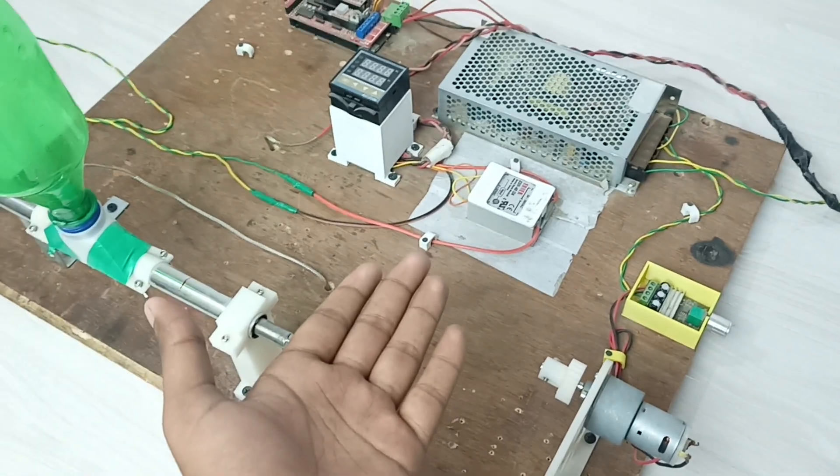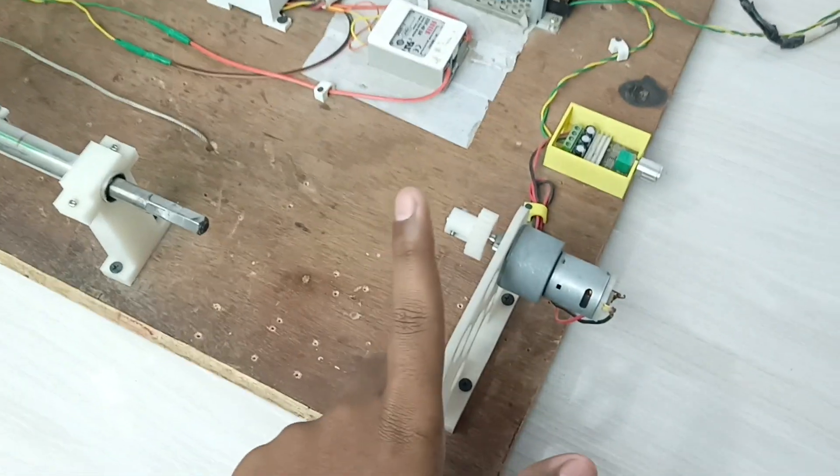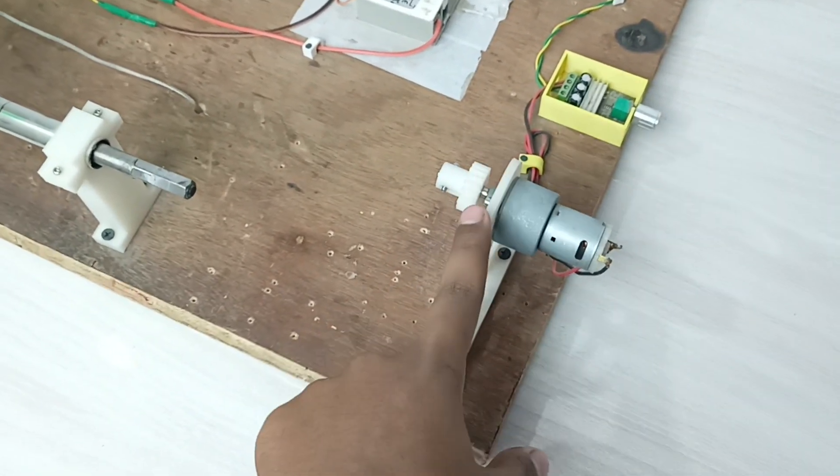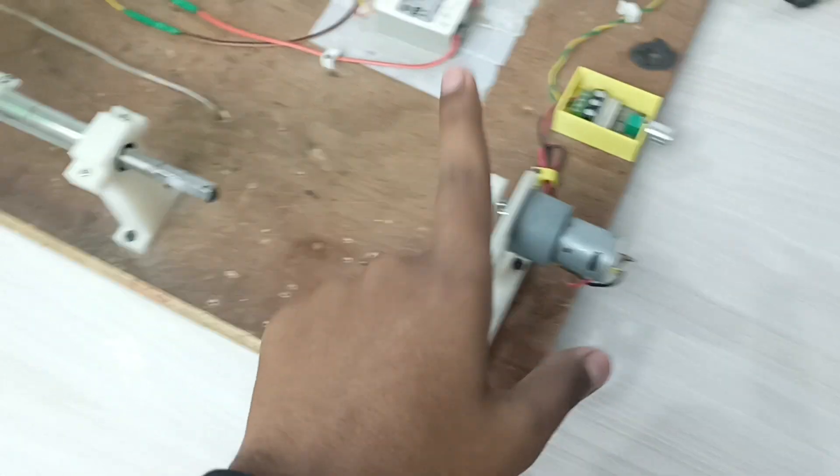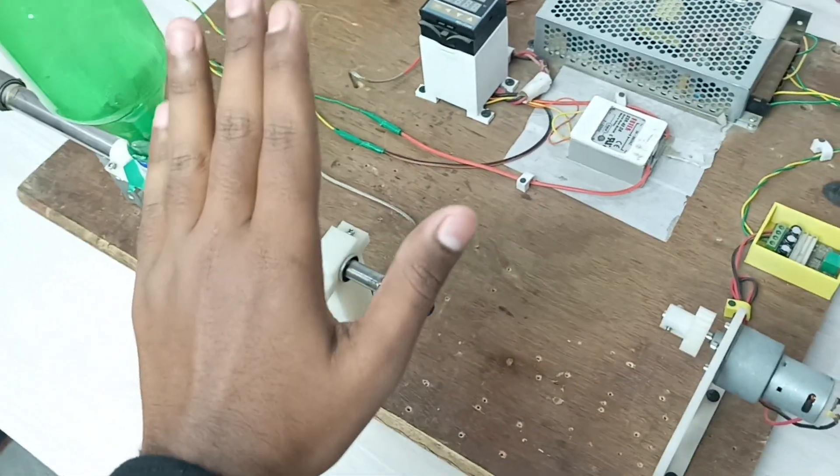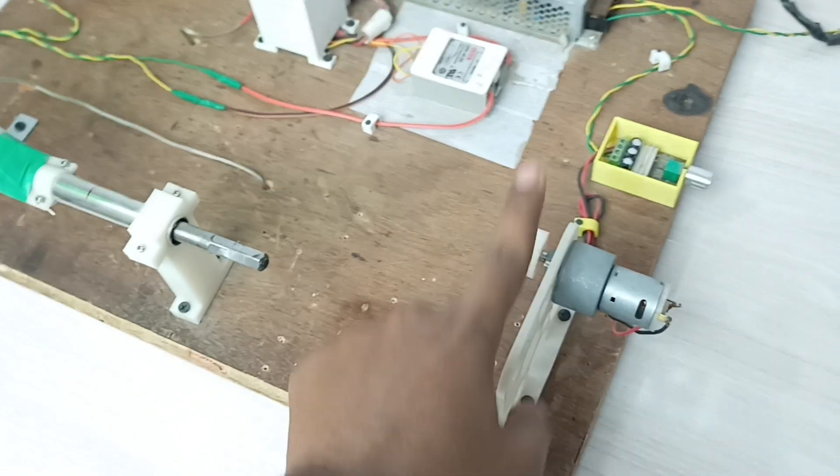But now I fixed it, and in the next video I'm going to show you every single thing. So without wasting any time, let's begin. This is the whole machine as you can see in front of you. We're going to come to this thing later because it is still unfinished. This is the most important thing. Most of you thought the heating element is the most important thing. Well, this is, I would say, the second most important thing. The first one is this thing.